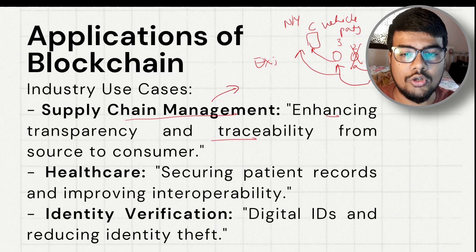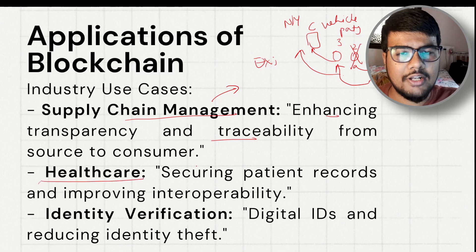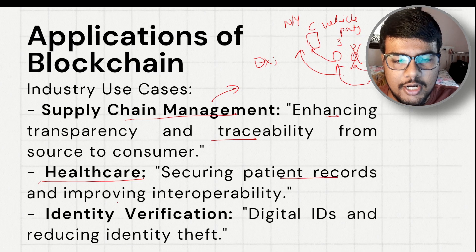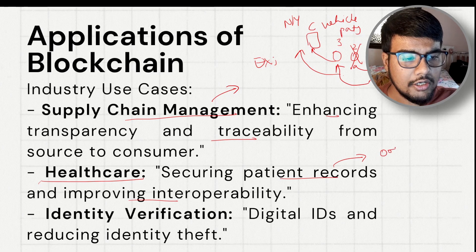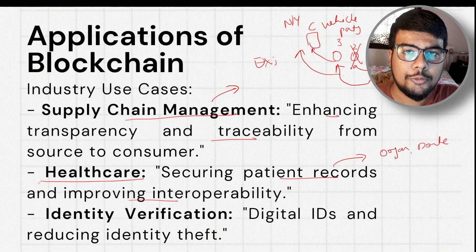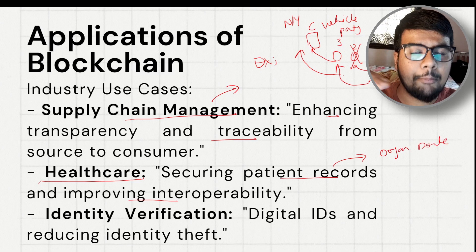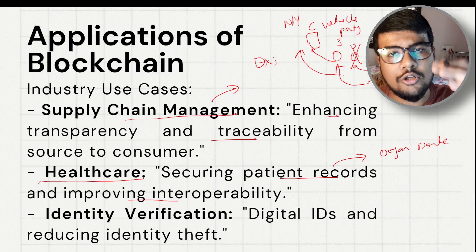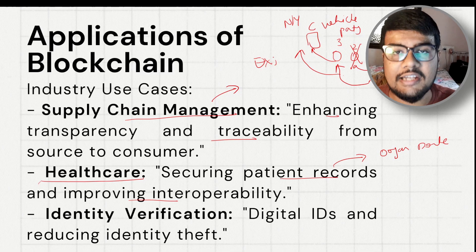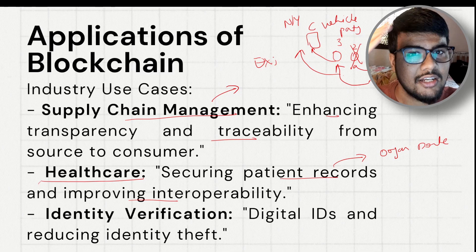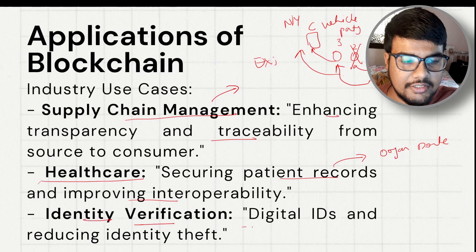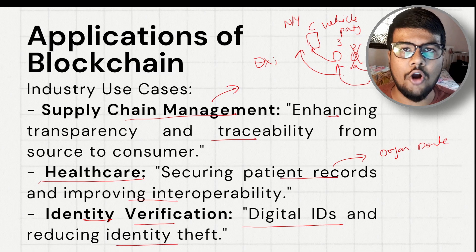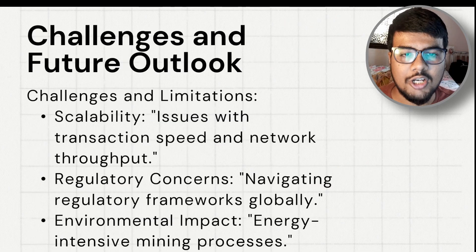Healthcare is another area where blockchain can be applied — securing patient records and improving interoperability. Blockchain can also be implemented in organ donation apps, where donor-recipient lists are maintained transparently so no tampering can occur. The person with highest priority gets the organ without any manipulation. Real-life examples like this show the range of blockchain applications. Identity verification — digital IDs and reducing identity theft — is another common use case.